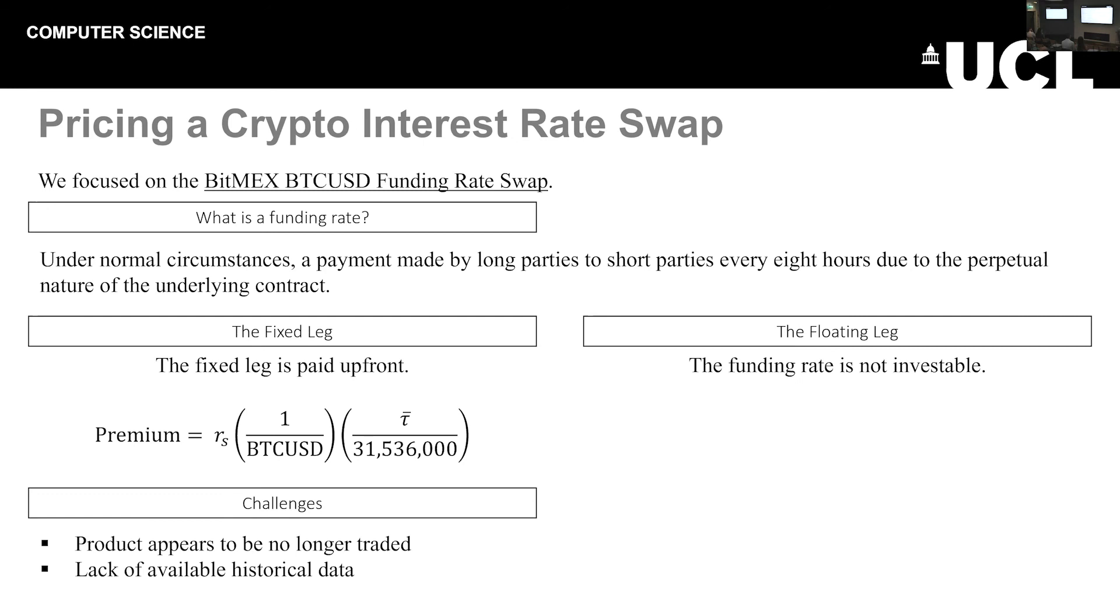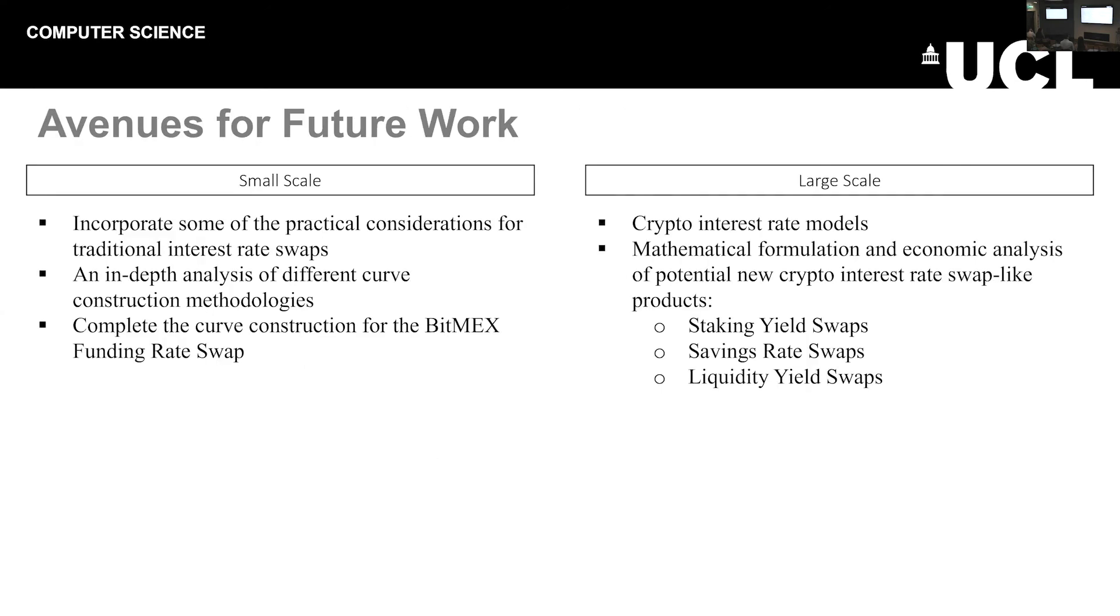Now, I would love to be able to stand up here and tell you that we've gone on further and constructed these crypto based curves. But unfortunately, I can't. It appears that this product is no longer traded. And there is a lack of available historical data for that time period, at least when it was traded. So that's somewhat limited our analysis. However, that does not mean that there are not avenues for future work. At the smaller scale, if someone were able to get a hold of that data, the historical data, then of course they could extend our analysis out and construct such curves. Alternatively, on a larger scale, there is a gap in the literature for a theory of cryptocurrency interest rates. And of course, there are other areas within the crypto markets that have variable rate payments and could, in theory, host interest rate swap like products.